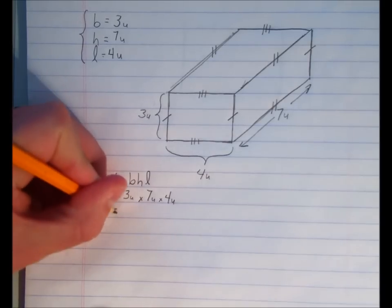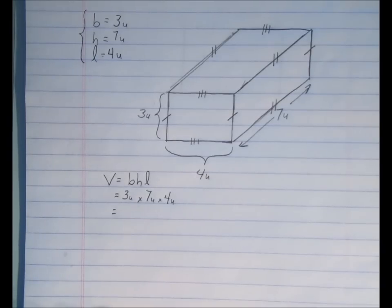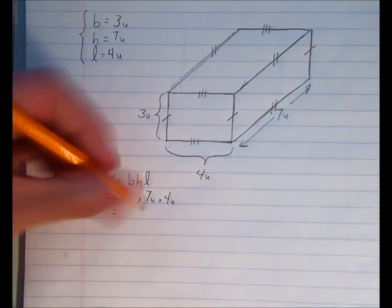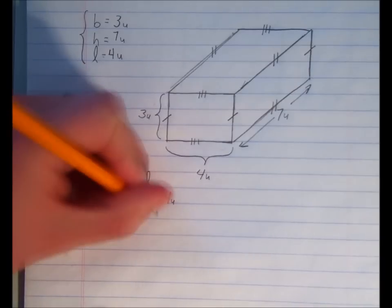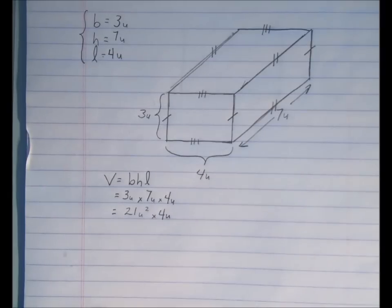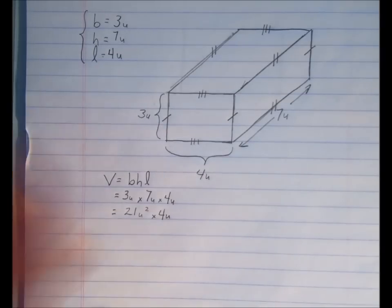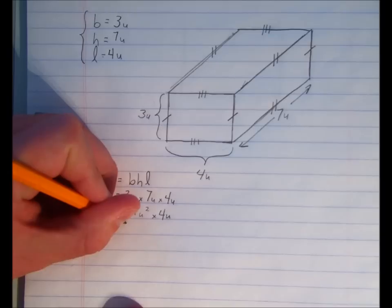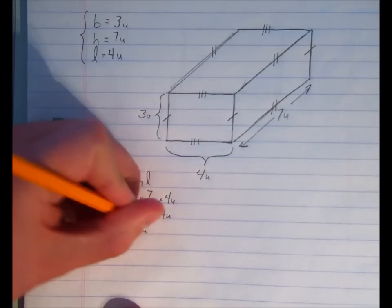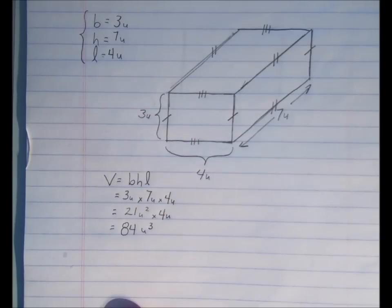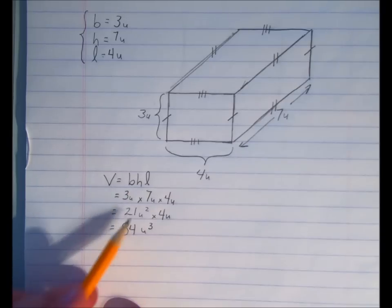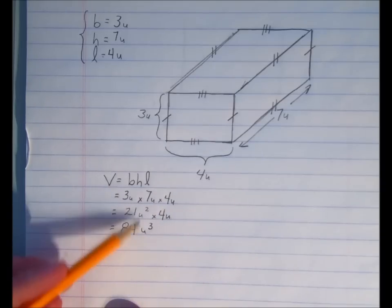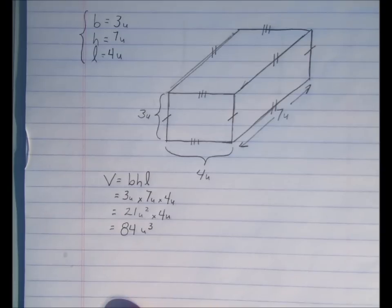Next I'm going to multiply those values together — you can use a calculator if you need to. I'll simplify step by step: three times seven gives me 21 square units, then 21 units squared times four units. For 21 times four, try 20 times four which is 80, plus 1 times 4 which is 4, so 80 plus 4 equals 84 units cubed. That's the volume. Notice that units times units gives units squared, and units times units times units gives units cubed.